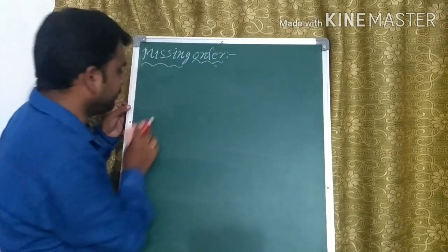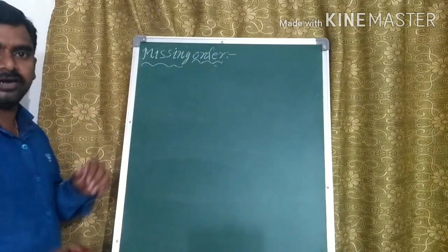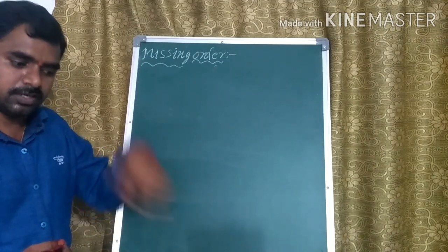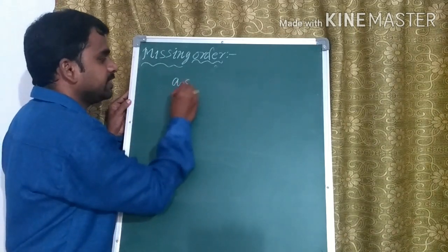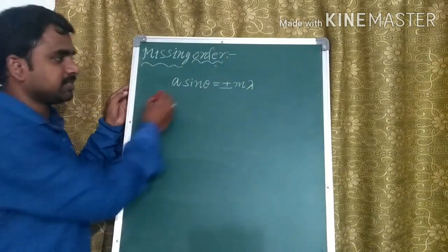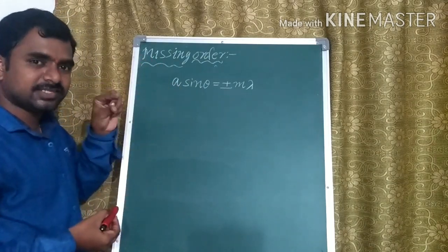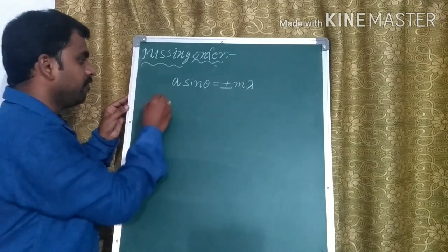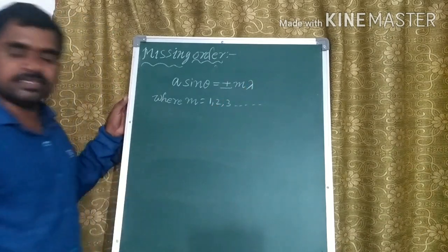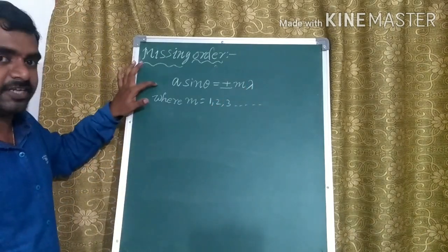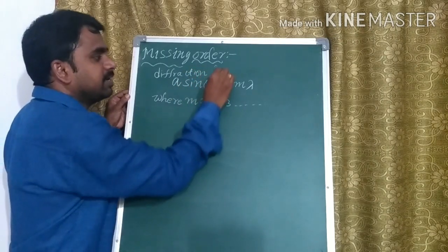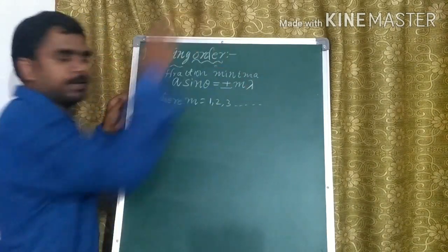Now I will show you what orders we are going to miss in the Fraunhofer double slit experiment. The condition for minima due to the diffraction pattern, what we got previously, is: A·sinθ = ±Mλ, where A is the slit width, θ is the angle of diffraction, and M = 1, 2, 3, and so on. This is the condition for diffraction minima.